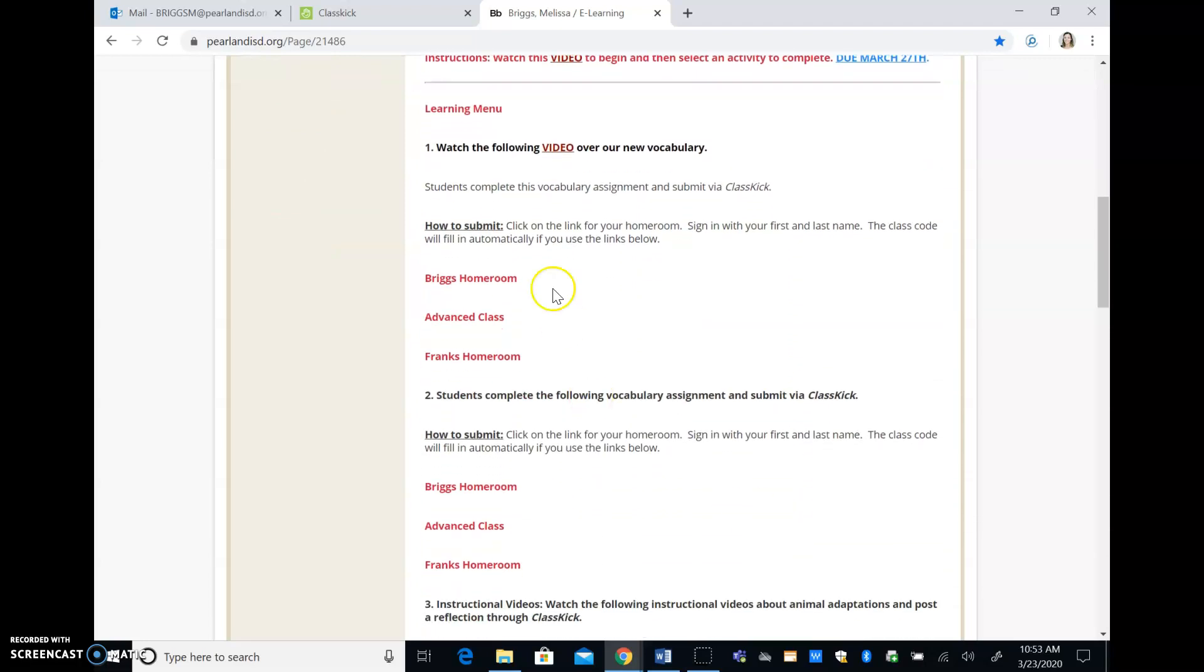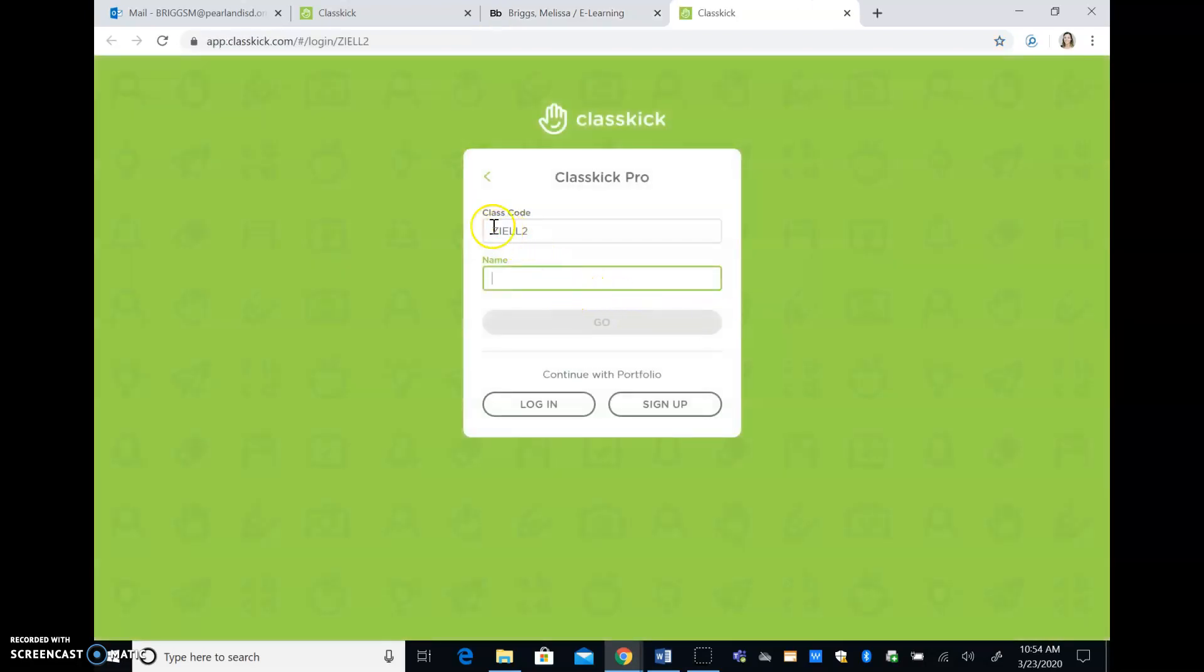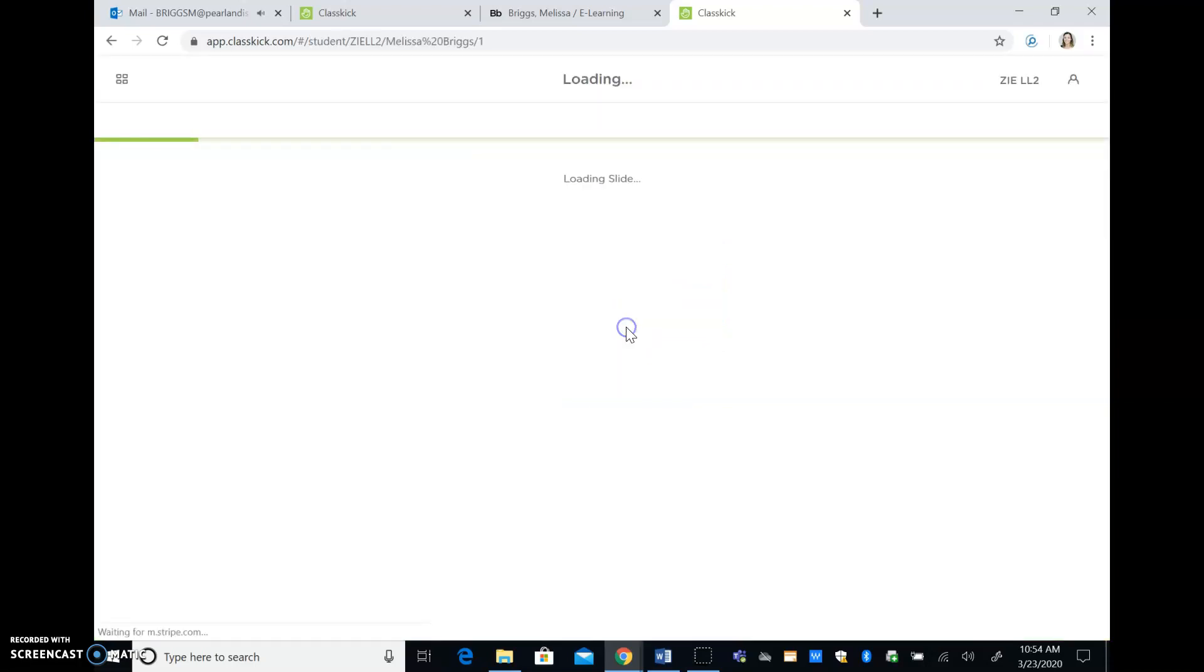So when you're doing this, let's say you've watched the video and you're getting ready to submit your assignment. You're going to click the link for your homeroom, sign in with your first and last name, and the code is automatically filled in for you. So let's say I'm going to do the advanced class. My code's already filled in, I type in my name, first and last. It's very important because some of you guys have the same first name, and that's why it's very important for you to type in your last name as well. You'll hit go.